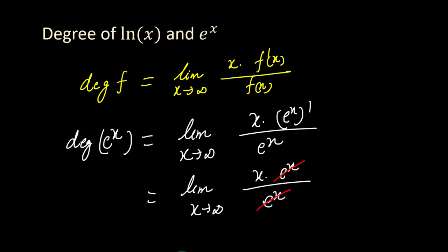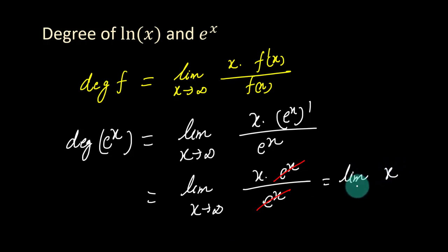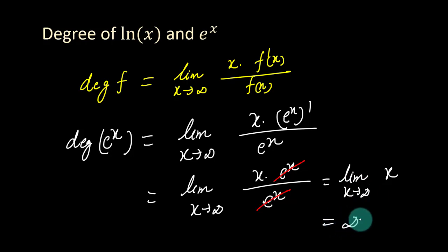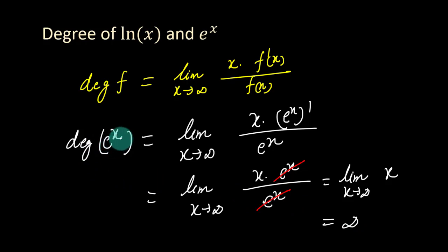We cancel e to the x by e to the x and we are left with the limit of x when x approaches infinity. Definitely it is equal to infinity. So the degree of the exponential function e to the x is equal to infinity.